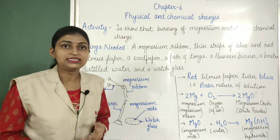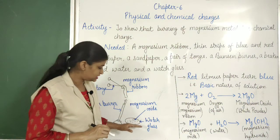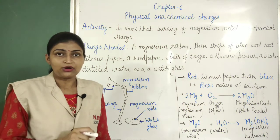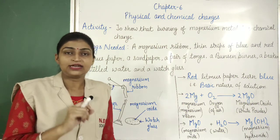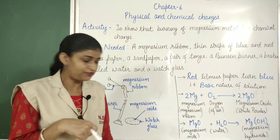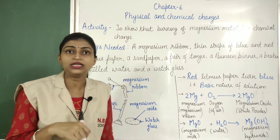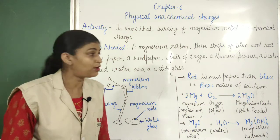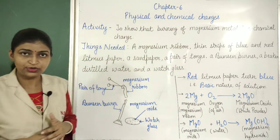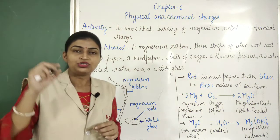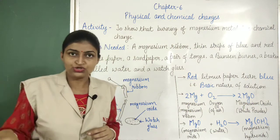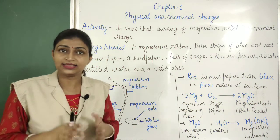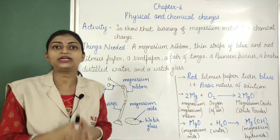We have also discussed the chemical change to dissolve this white powder in water. Now we will test whether the solution prepared by dissolving this white powder in water is acidic or basic. We will take the help of red and blue litmus paper. When we pour some drops of this solution on the blue litmus paper, it will not change its colour. That means the solution is not acidic.